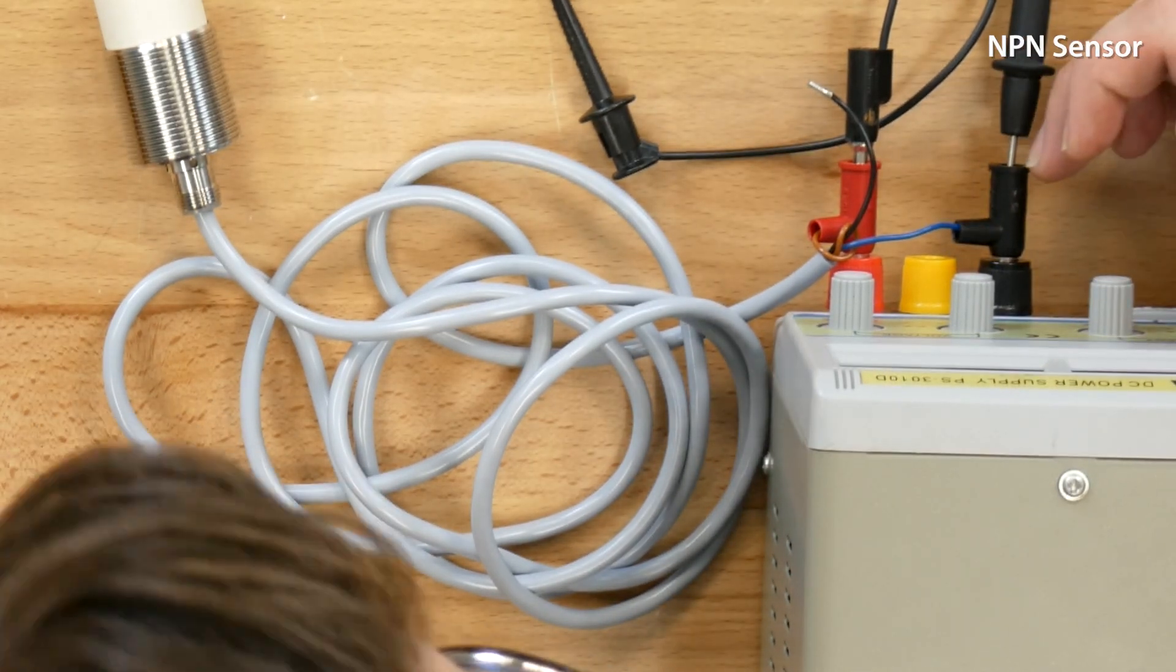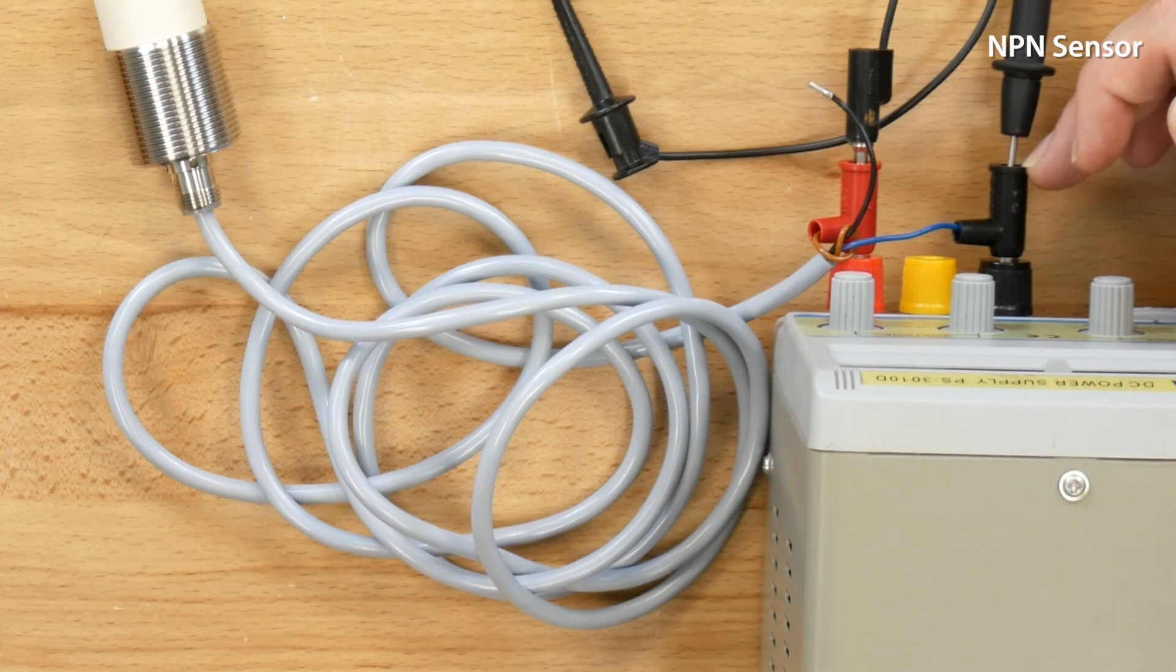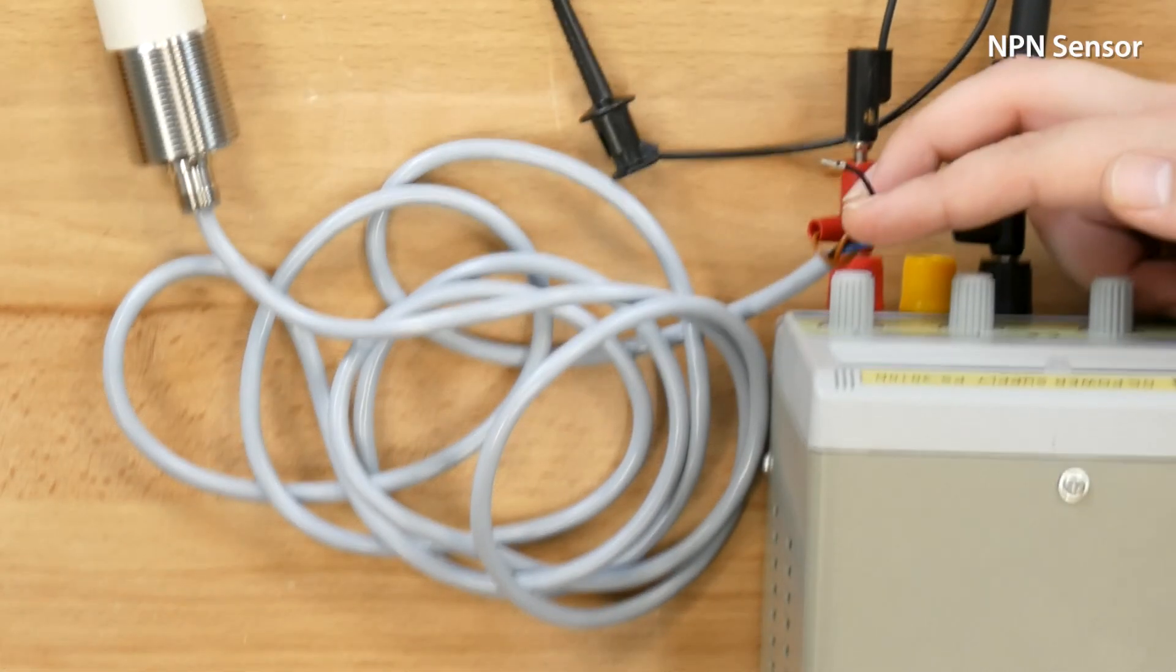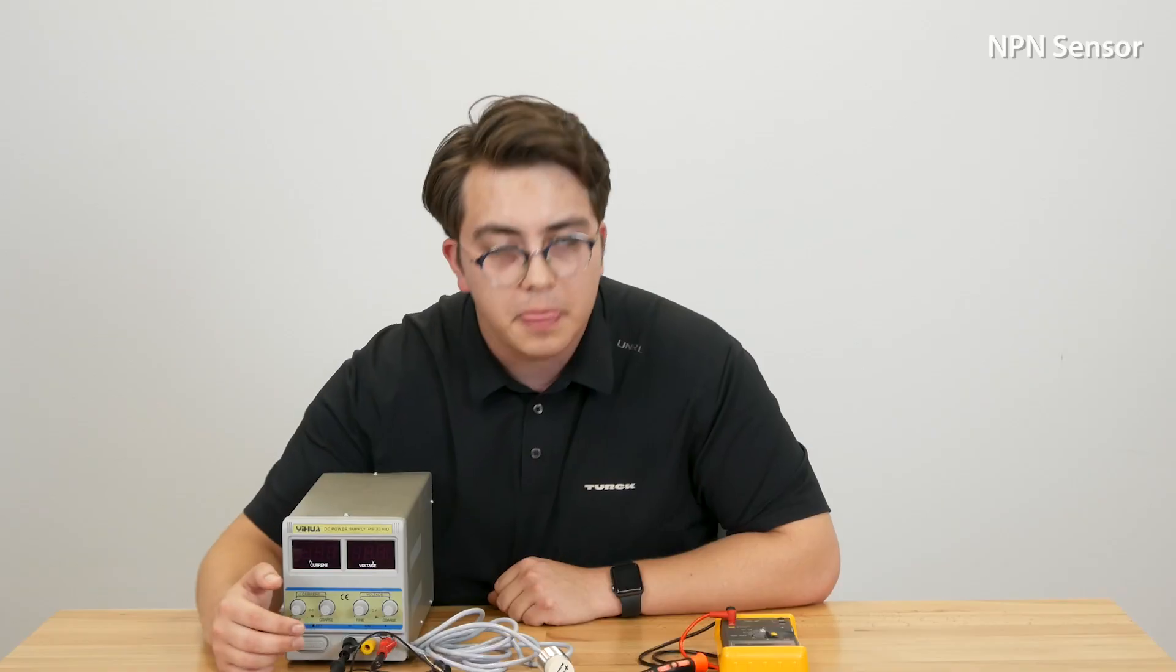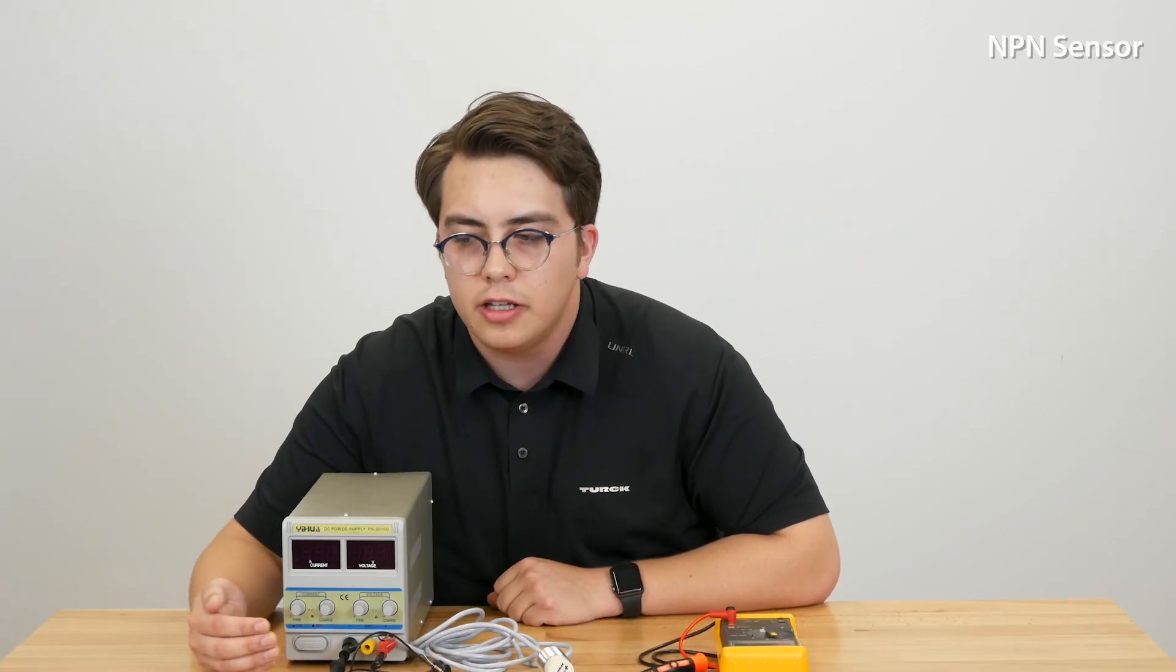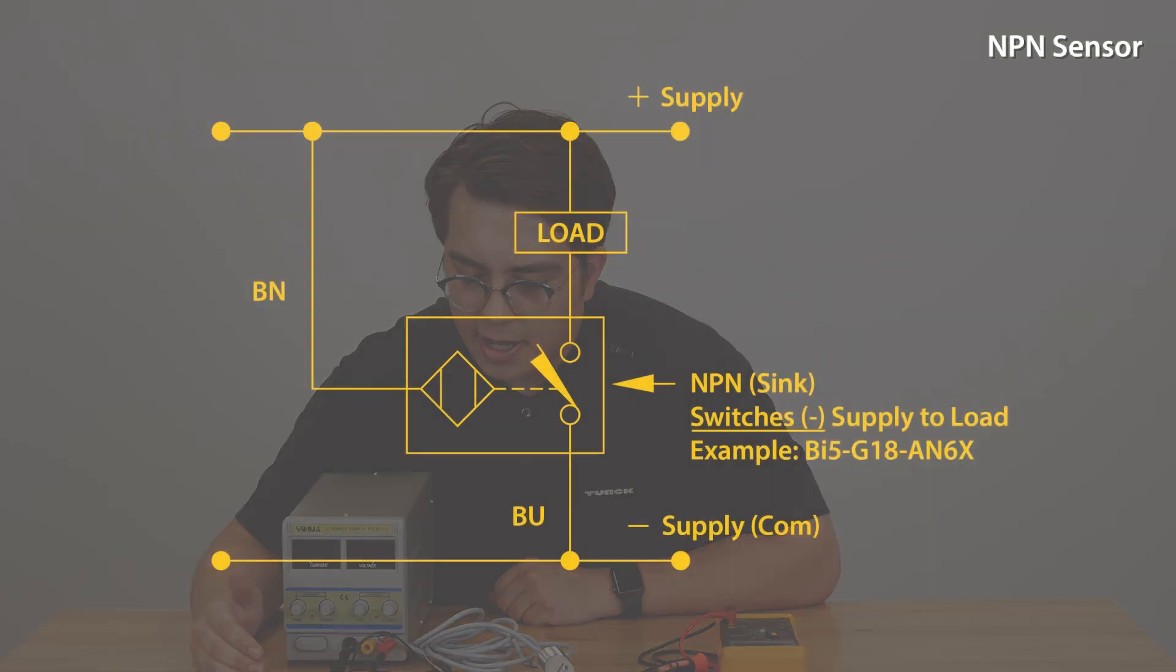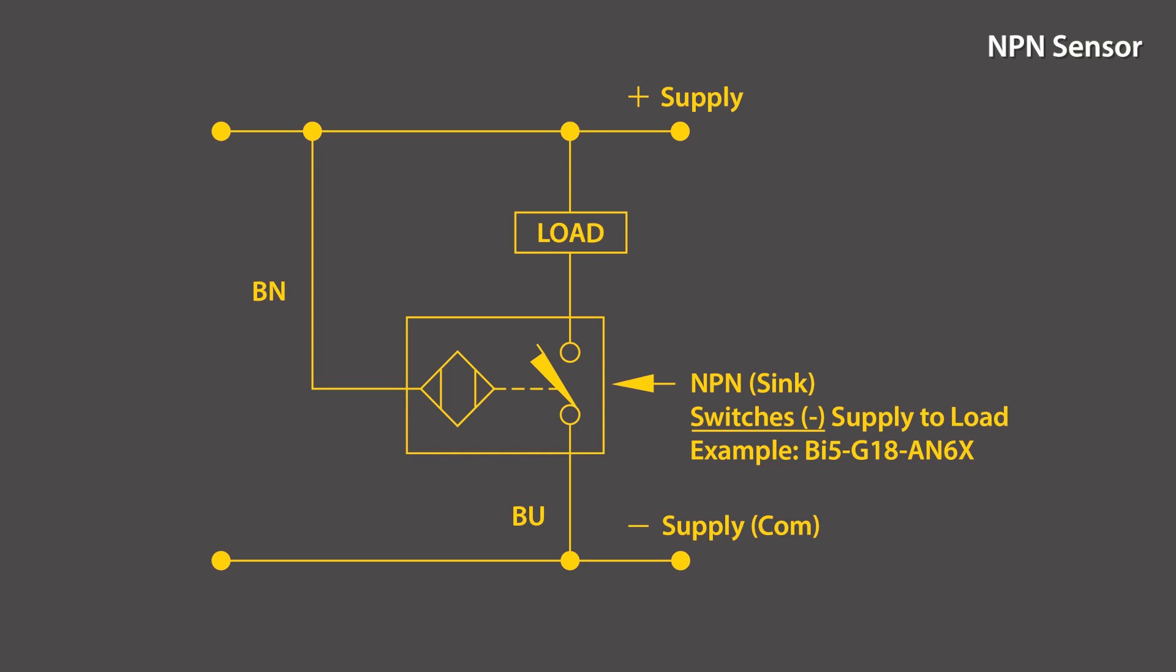You'll take pin 3 and connect that to the negative on your power supply. And lastly you'll have your output pin which should be a black conductor at least in this case. With NPN signals the output generally is tied to a positive signal, a 24 volt signal in this case. So what that means is that you want a load in between your output and the 24 volt signal that it's going to be attached to.